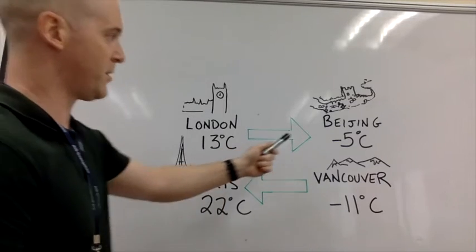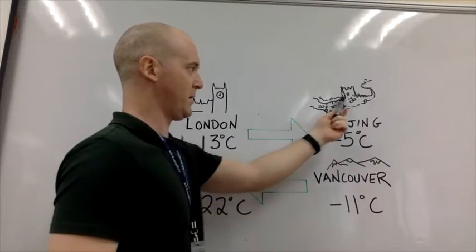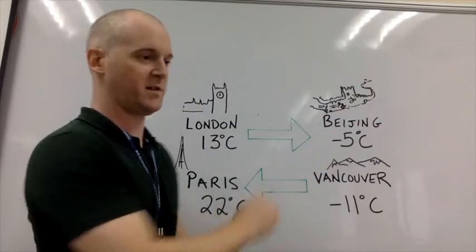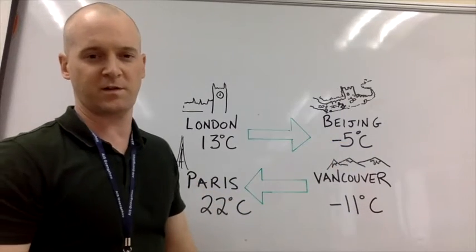Over on the other side of the world we've got Beijing, and that's obviously the Great Wall of China, you can see that receding into the distance majestically. Okay, negative 5 degrees C.